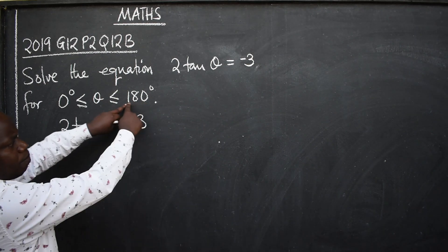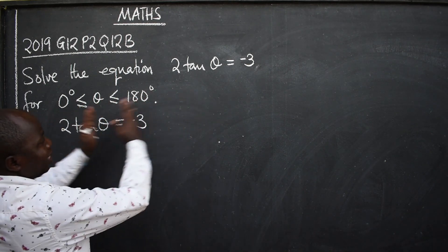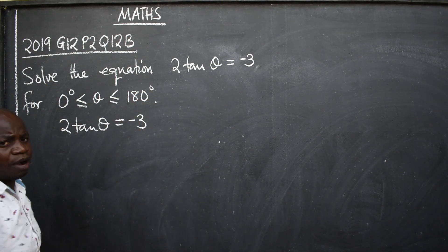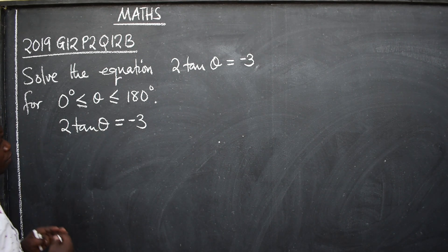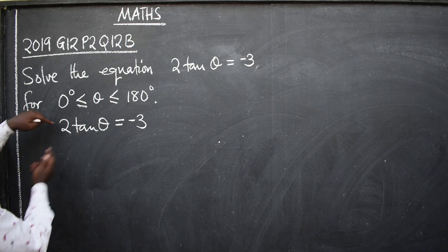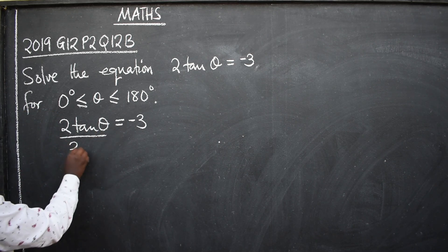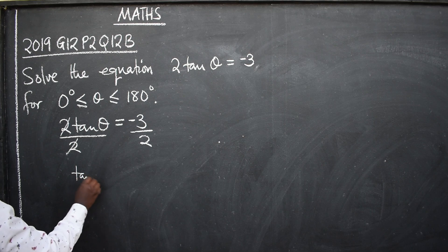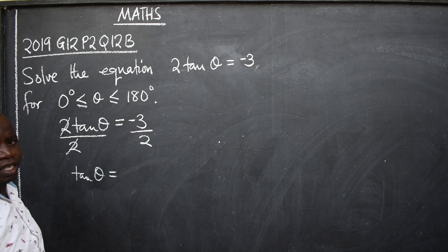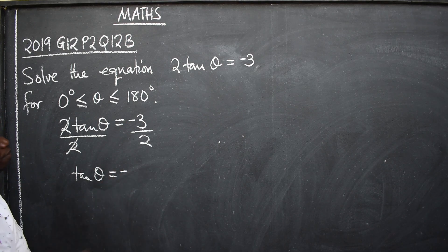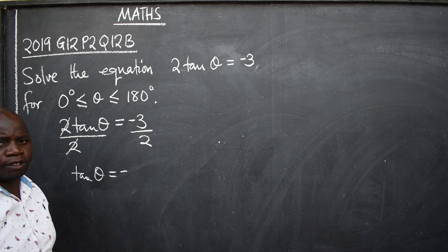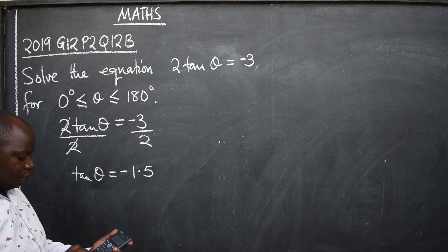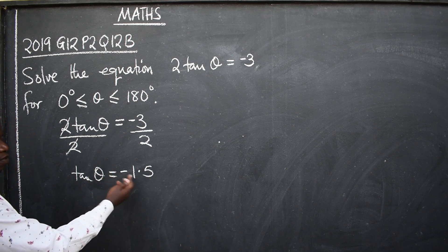Sometimes the range will go up to 360, meaning you have to go up to 360. For this one, 0 to 180. On the left-hand side, you have to make sure you remain with just the ratio, which is tan theta. So we are going to divide both sides by 2 to cancel the 2. We remain with tan theta is equal to negative 3 divided by 2, which gives us negative 1.5. This is paper 2, so you are free to use the calculator.